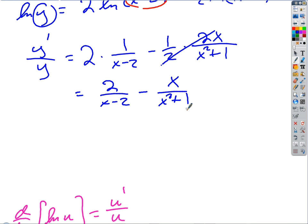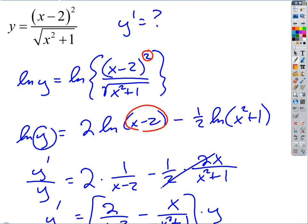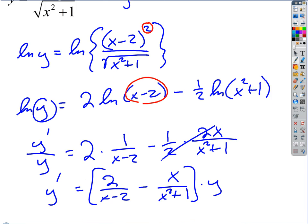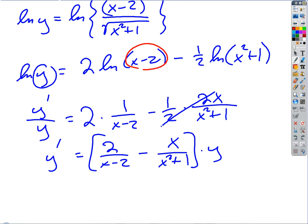Multiply by y. So y prime just equals all that stuff times y. But what's y? I'd prefer not to write this in terms of x's and y's. I'd prefer to write that in terms of x's. But, lo and behold, look what we got there. There's our y. I could just plug that back in, couldn't I? Exactly. And, honestly, unless there's some simplification we can do, and there's really not. There's not a lot of simplification.